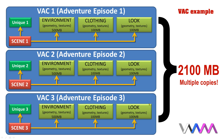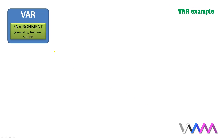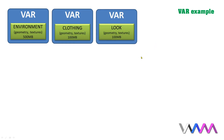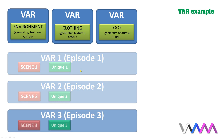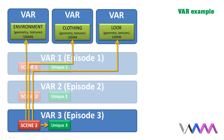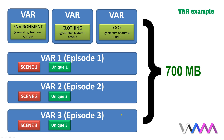Now here comes what the new VAR packages can do for us. The big villa environment should be distributed separately as a VAR file. Same counts for the clothing and the look. Then the scene creator makes the first episode, but the scene file and unique content — also released as a VAR file — just references to the standalone VAR files including the environment, clothing, and look. So the episode VAR file only includes the scene files, animations, and unique content for that particular episode. The same happens for the second and third episodes. Everything sums up to only 700MB, which is only one third of the space occupied with VAC files containing exactly the same content.